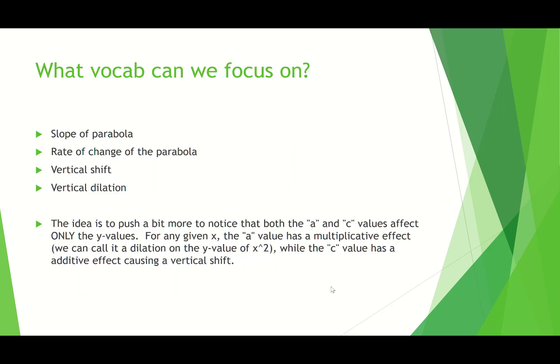So, what vocab can we focus on? So again, when you say the slope of the parabola, what you want to think about is not the slope as one value, but the slope at every point x, the slope of the tangent line at every point x. Some of you talked about the rate of change of parabola. To me, those seem like similar things, but again, the rate of change changes depending on where you are on the parabola. One of you wrote that the changes in c cause a vertical shift. That's fantastic. That's exactly what we are visualizing, where every y has a vertical shift, either in the positive or the negative direction.